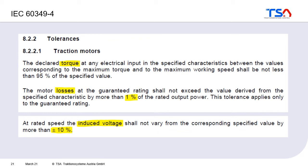The standard also defines allowed tolerances. For torque, it must not be less than 95% of the specified value. Motor losses must not exceed the specified losses by more than 1% of the rated output power. The induced voltage shall not vary more than ±10% from the specified value. Achieving these tolerances is not always easy, given manufacturing variations in magnet flux, magnet dimensions, and steel sheet dimensions.